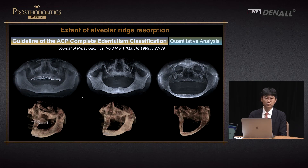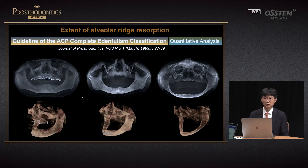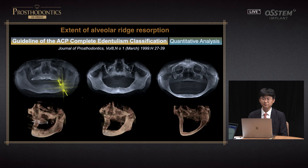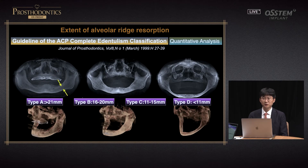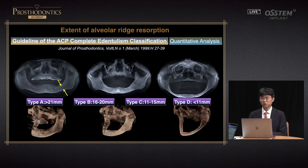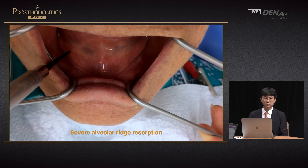If we treat a patient with stable TMJ, complete denture treatment can go smoothly. But with very severely resorbed alveolar bone and unstable TMJ, the situation is very hard to treat. This is the ACP classification for extent of alveolar ridge resorption. Alveolar ridge resorption is very important, but clinically I find that unstable TMJ factors pose the greatest difficulties.